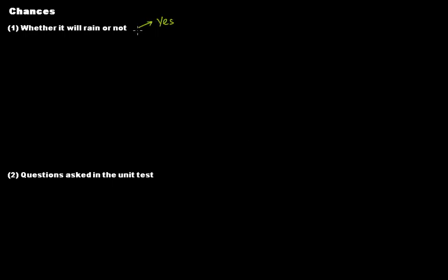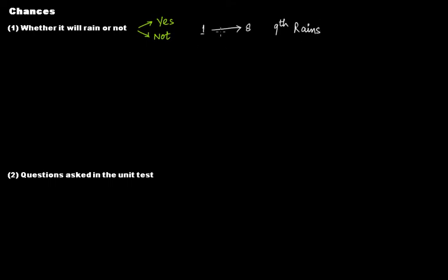There can be two outcomes: it might rain or it might not. The two outcomes, but the chances are not equal. There's no way to tell that the chance of raining and the chance of not raining is equal. For eight consecutive days you carry an umbrella but it doesn't rain. On the ninth day you decide not to carry the umbrella, and it rains. So clearly it is all about chance — you cannot say for sure whether it will rain or not.